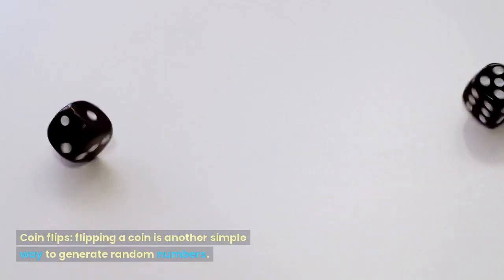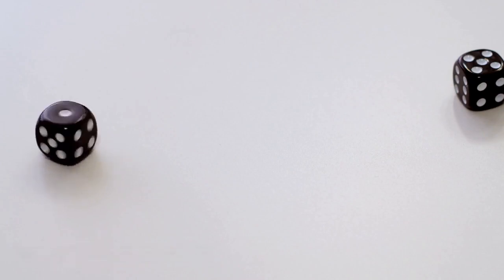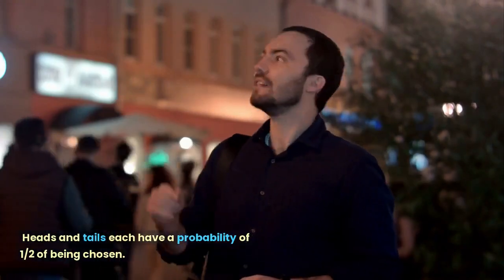Coin flips. Flipping a coin is another simple way to generate random numbers. Heads and tails each have a probability of half of being chosen.